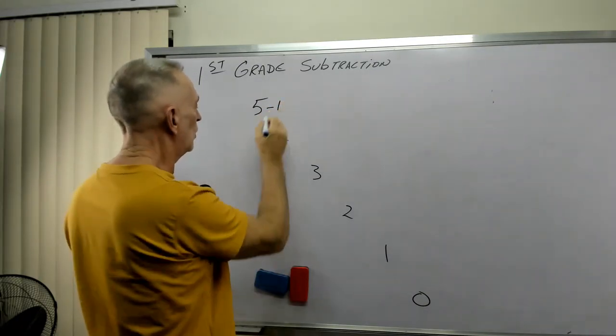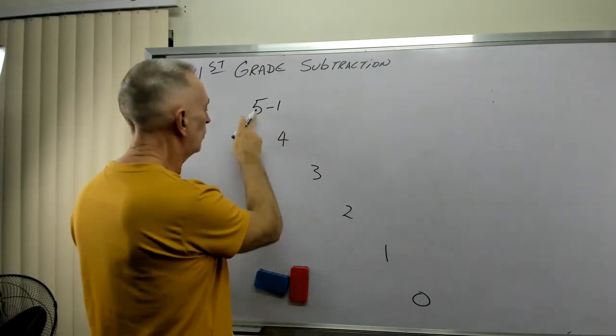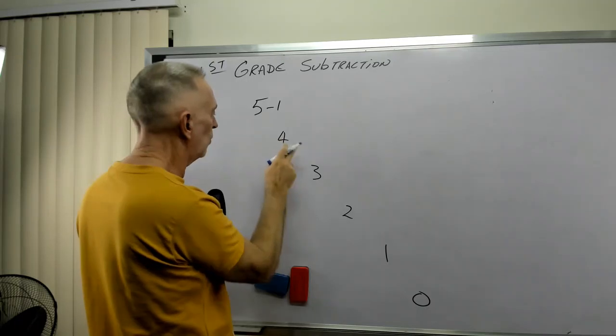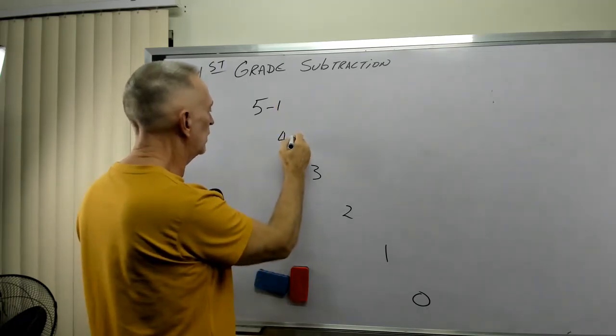Five minus one. If we count down, five, four, three. Five minus one is four.